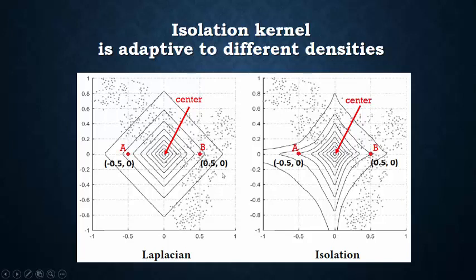In contrast, Laplacian kernel is independent of data distribution. Its contours stay the same independent of data distribution. Points A and B have the same similarity to the center point independent of the density of the local region.